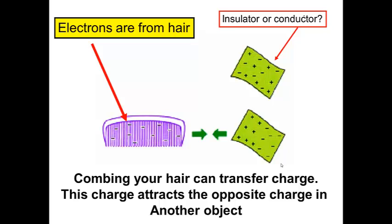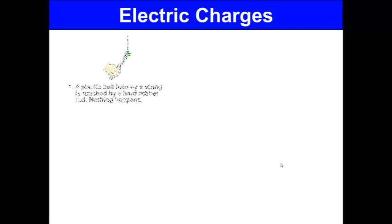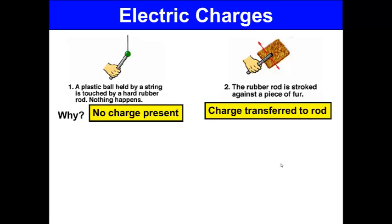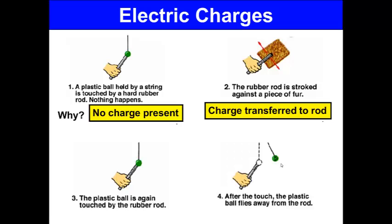So the electrons are from the hair. The cloth is an insulator. So here, a plastic ball is held by a string. It is touched by a hard rubber rod, and nothing happens. Why? There is no charge present. When the rubber rod is stroked against a piece of fur, charge is transferred from the fur to the rod, and it becomes negative. Now the plastic ball is again touched by the rubber rod, and after the touch, the plastic ball flies away from the rod. That is because they have like charges, so they repel.